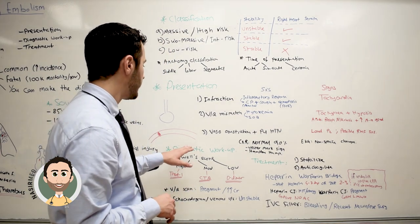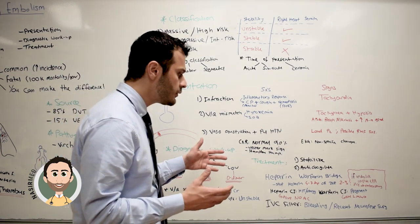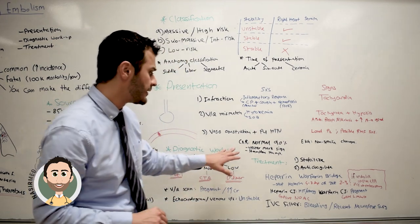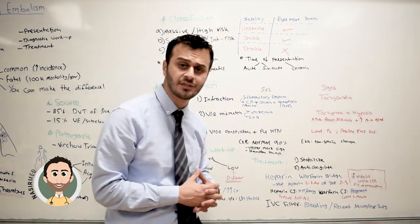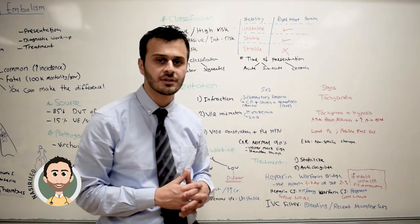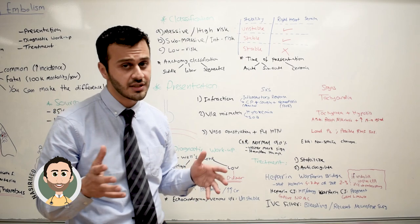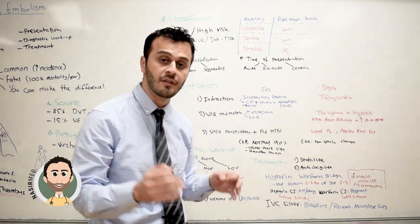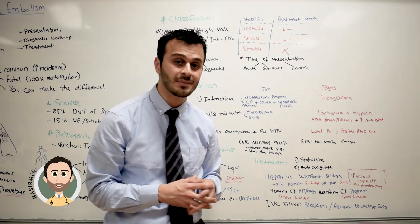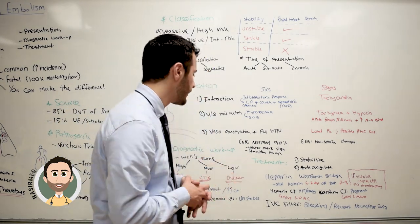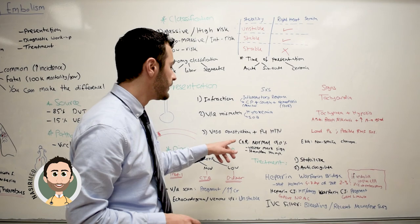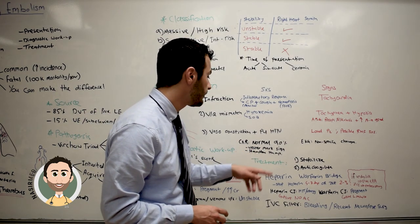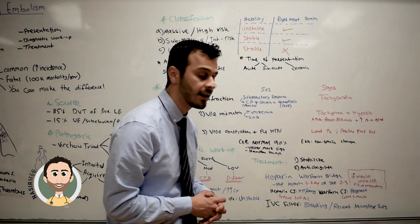Now, if you suspect pulmonary embolism and take a chest X-ray, 90% of the time the chest X-ray will be normal. However, if the pulmonary embolism is severe, it can present with a Westermark sign — basically a loss of vascular markings distal to the area of obstruction.